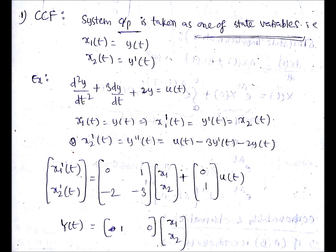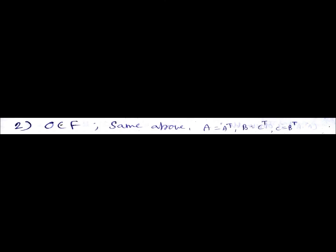It is usual practice to take first state variable as output, so it will be [1 0], then based on that you will get B as [0; 1] and A from the given equation. This is a controllable canonical form.